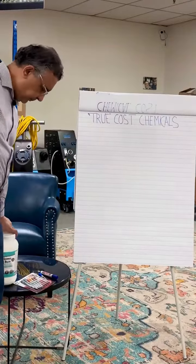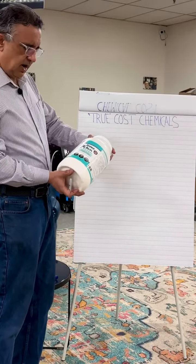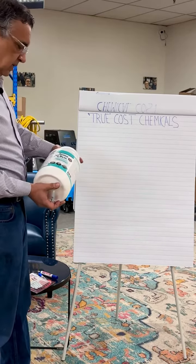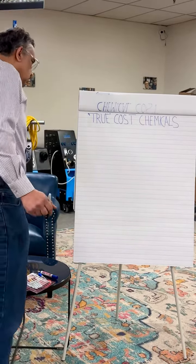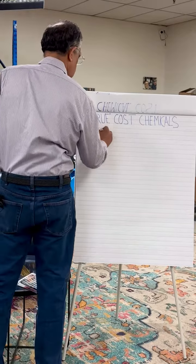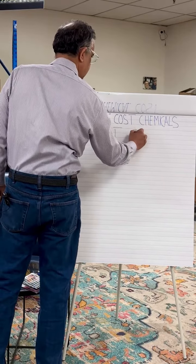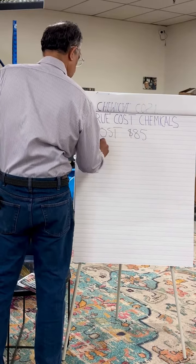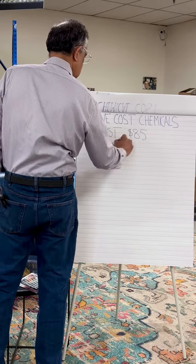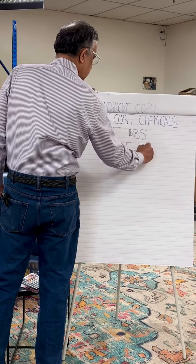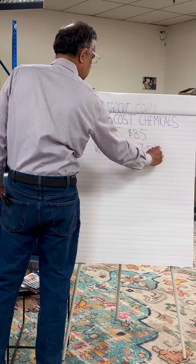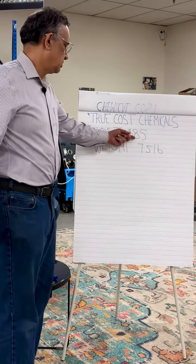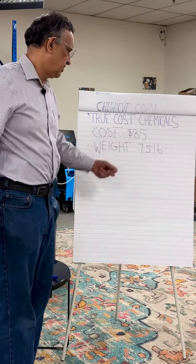So get a product. In this case I grabbed the Grease Eater — it's a 7.5 pound pail that cost $85. That's what the chemical costs and it's 7.5 pounds.